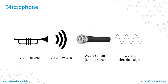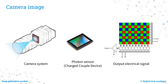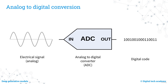A microphone functions as a type of pressure sensor by converting changes in air pressure into mechanical movement, such as the movement of a diaphragm, which is then transformed into an analog electrical signal. An image from a camera is produced by a photon sensor, like a charge-coupled device (CCD), which converts light energy into an analog electrical signal. An analog signal from a sensor can be converted into a digital signal using an analog-to-digital converter, translating a physical quantity into a digital code usable as input for an algorithm.